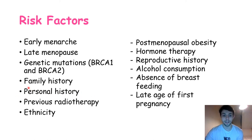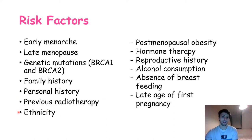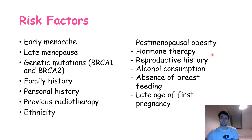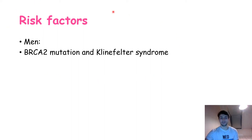Other unmodifiable risk factors include history of previous radiotherapy, especially to the area — for example, if someone had lung cancer and underwent radiotherapy — and ethnicity. When it comes to modifiable risk factors: postmenopausal obesity is a big risk factor, hormone therapy especially related to estrogen, reproductive history such as having no children, alcohol consumption, not breastfeeding, and late age of first pregnancy.